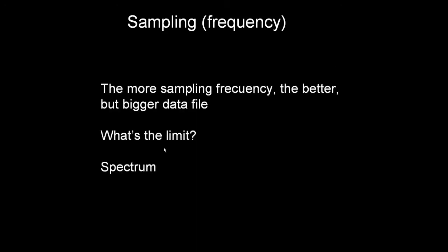Doubling the frequency means doubling the number of points along the wave. The more sampling frequency, the better, because there are more points to represent the original wave. But the data file is bigger. What's the limit? Above what frequency is there no benefit in increasing the sampling frequency? It depends on the spectrum of the original signal.